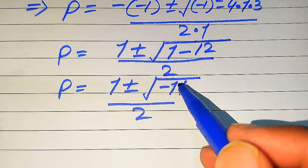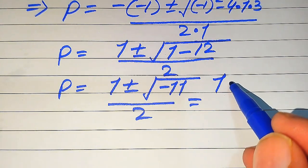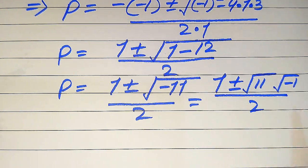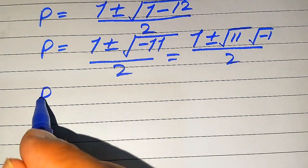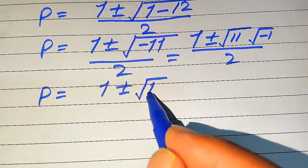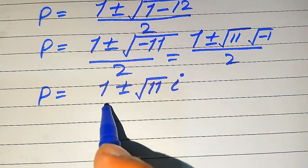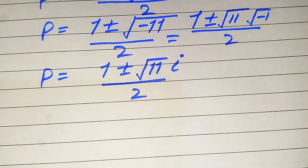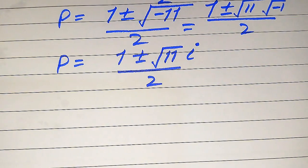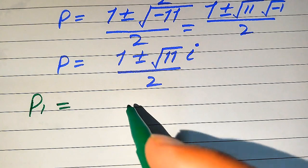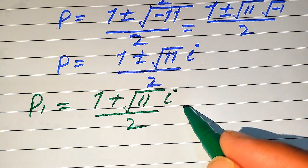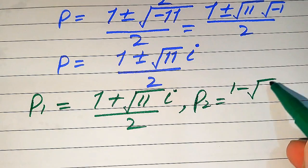We apply the square root separately: √(−11) = √11 · √(−1). Since √(−1) = i (iota), this becomes (1 ± √11 · i) / 2. So we get two complex or imaginary roots. The first root is P₁ = (1 + i√11) / 2 and the second root is P₂ = (1 − i√11) / 2.